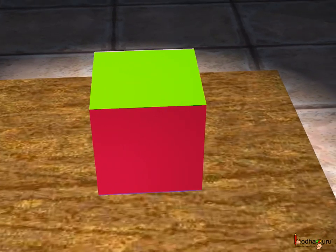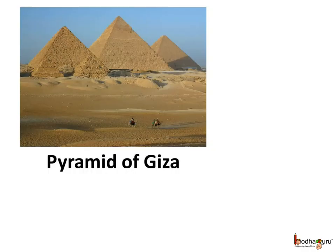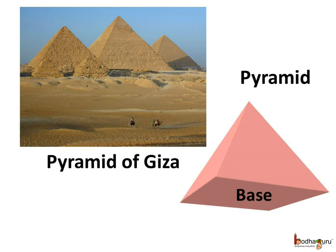See, this is the pyramid of Giza. What kind of faces does this kind of pyramid have? Let us see. It is similar to this pink colored solid shape.